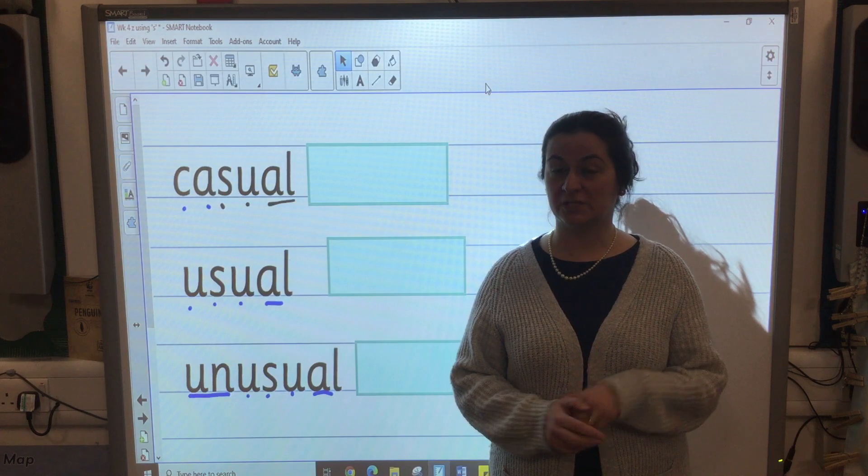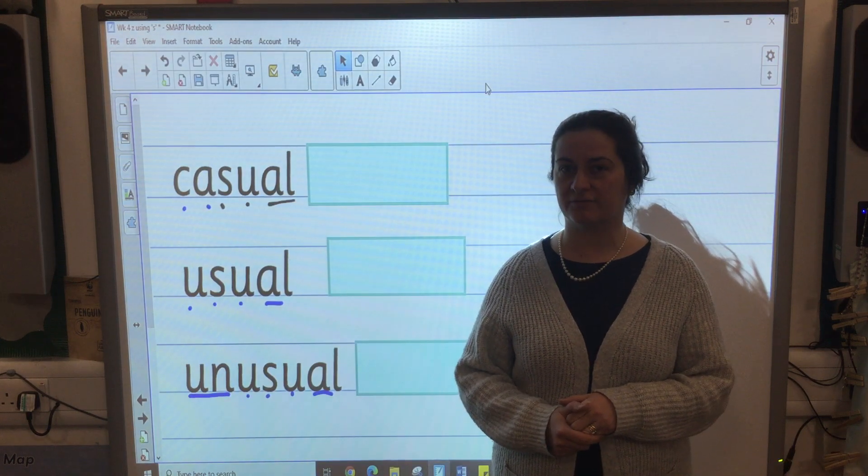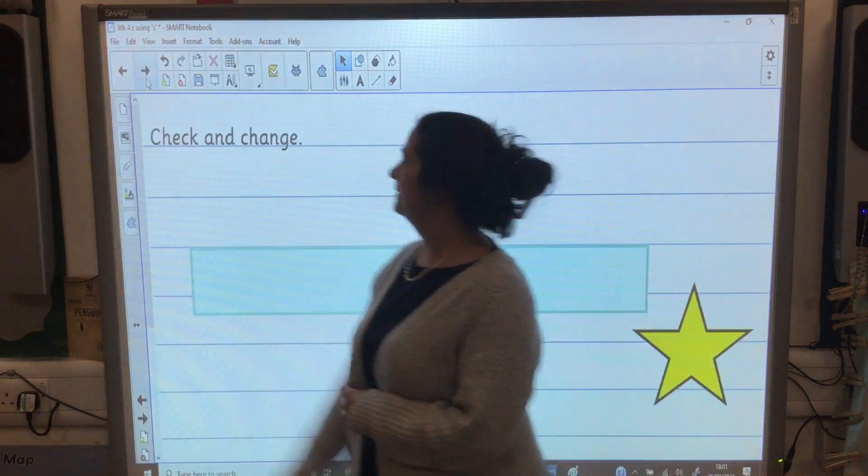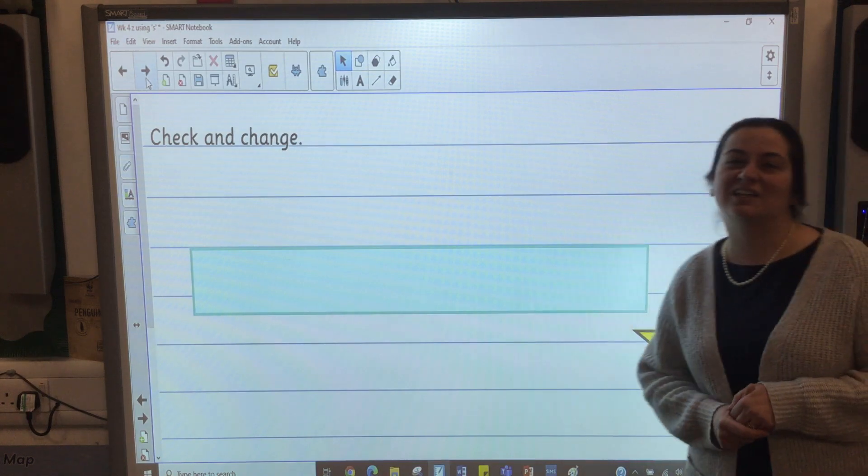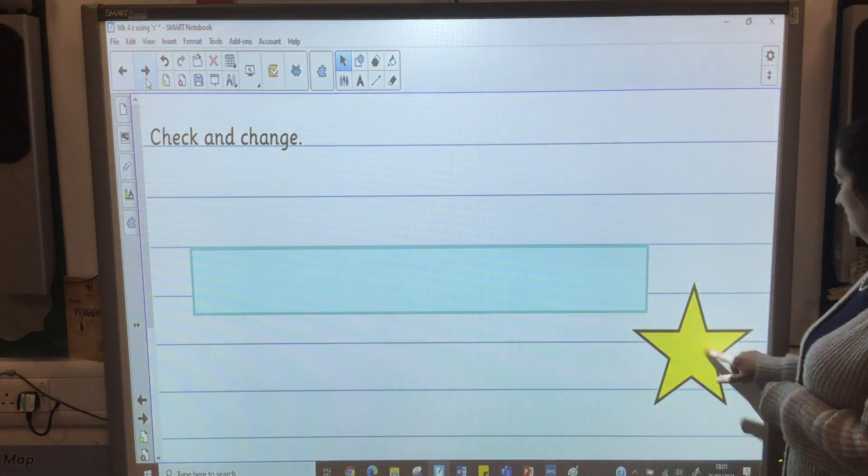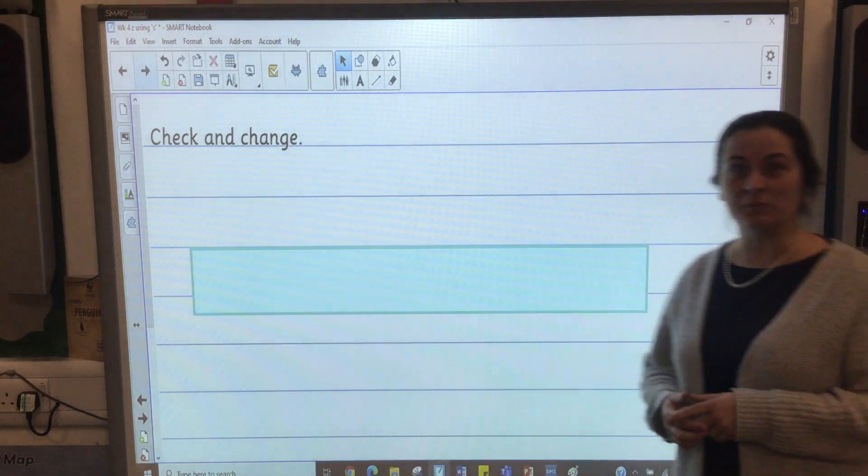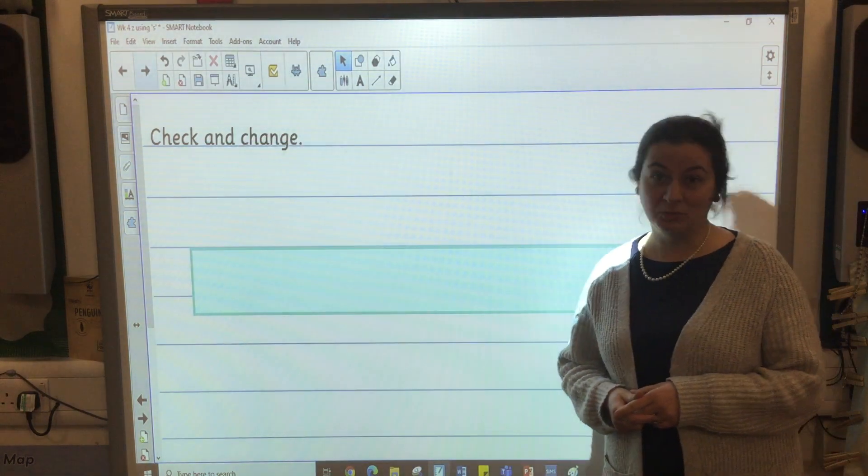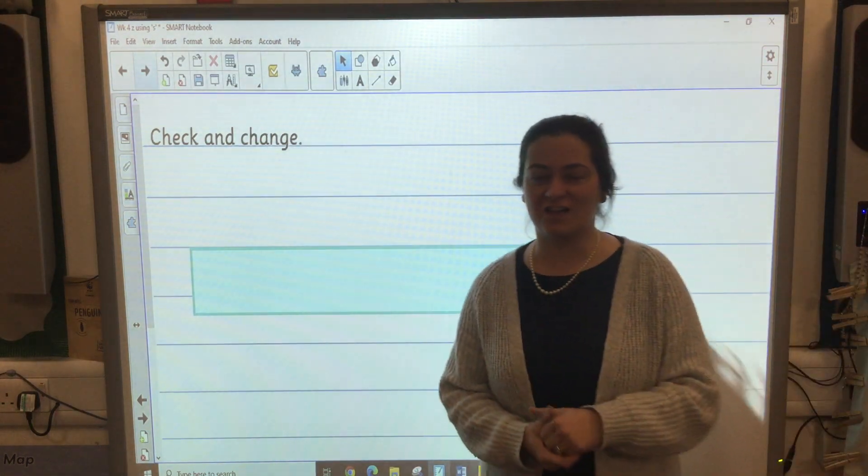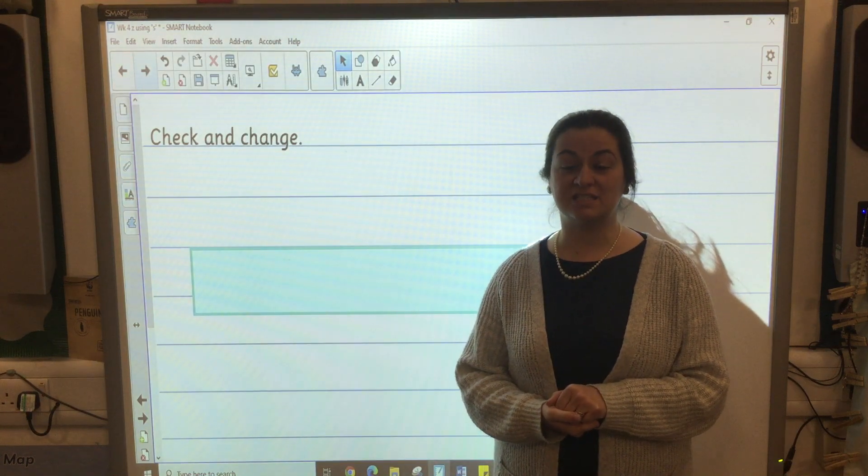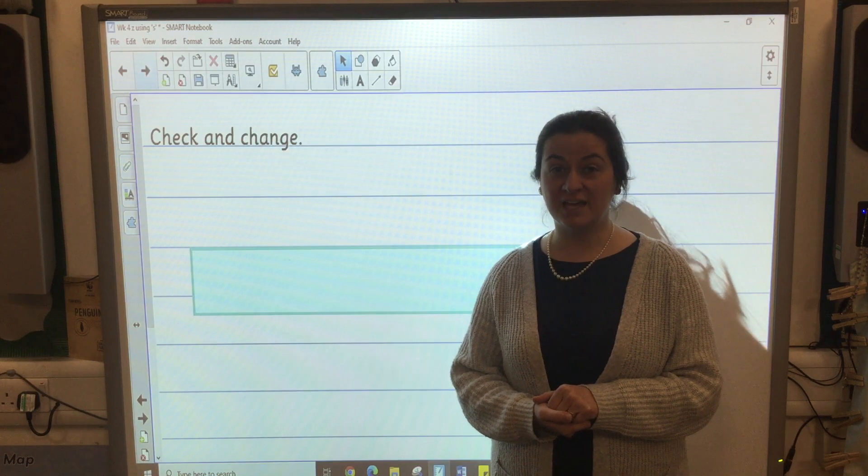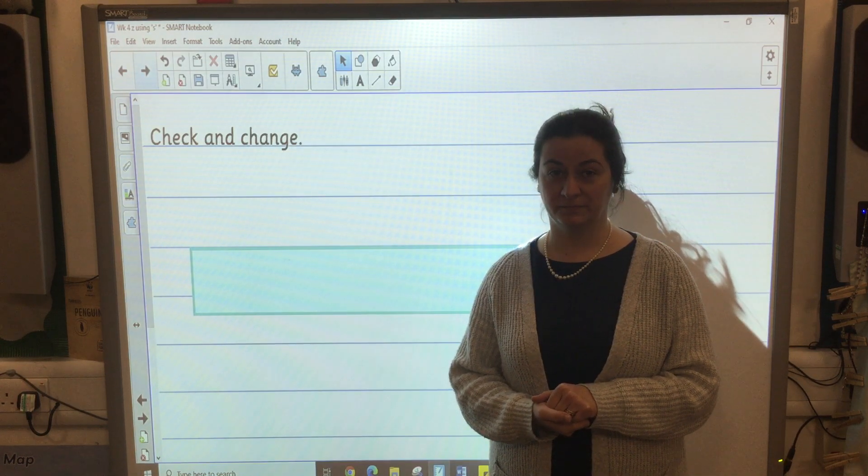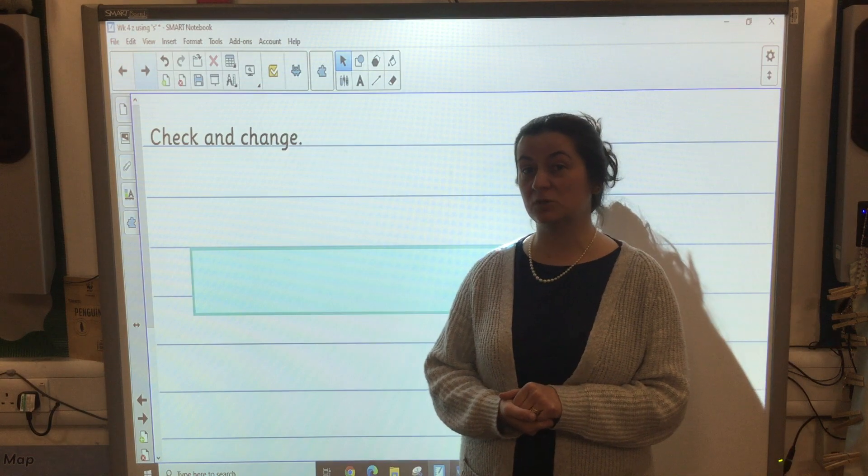On your boards or in your books leave a line and be ready for my sentence. I'm going to do something first today. Can you see my star? Do you like looking at the stars in the sky? I love it. That was unusual. You don't normally see them shooting, flying. The sentence is that was unusual. Pause the video if you need some more time.